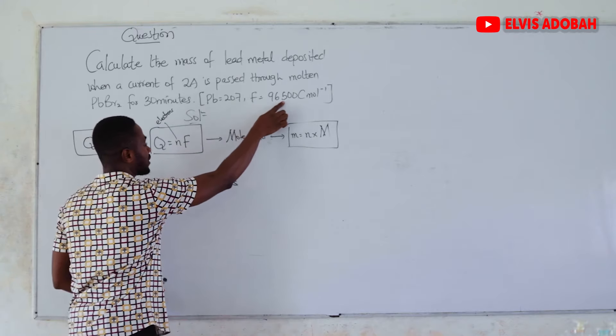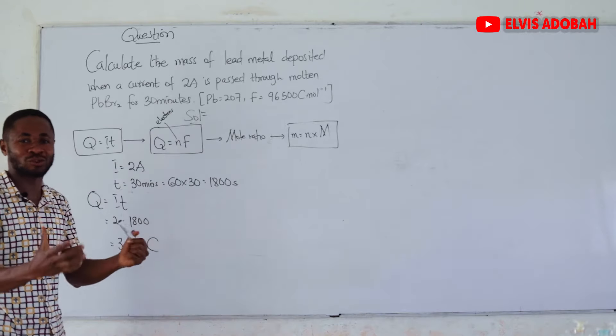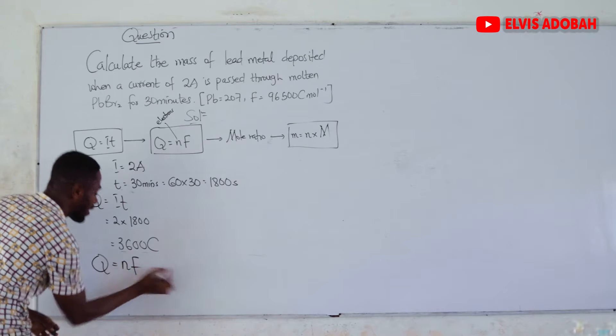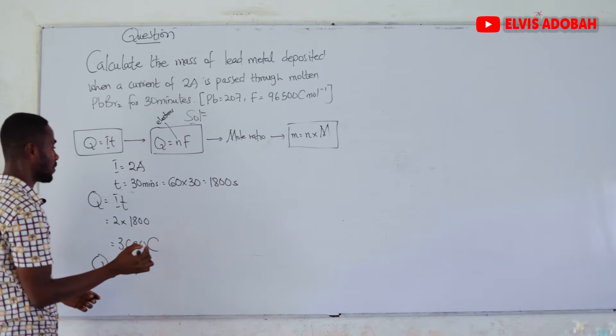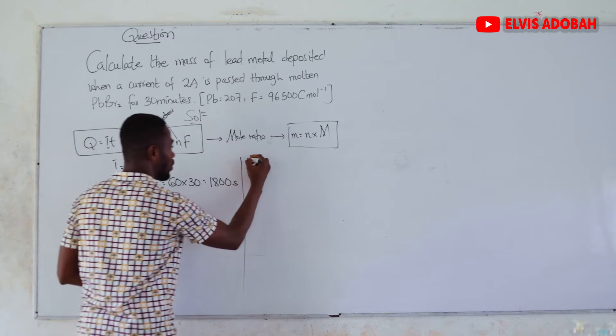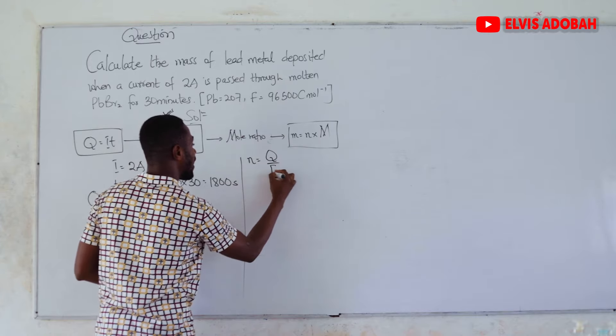The unit for quantity of electricity is Coulomb. Then, we use the quantity of electricity and F, which is our Faraday's constant, to calculate our amount of electrons in moles. We know Q is equal to NF.